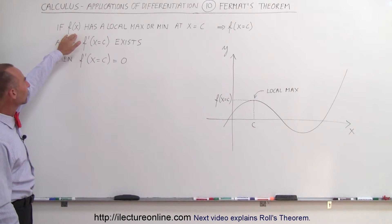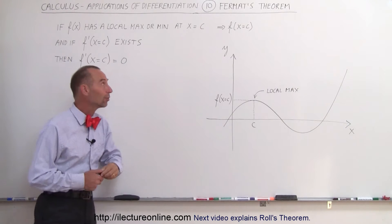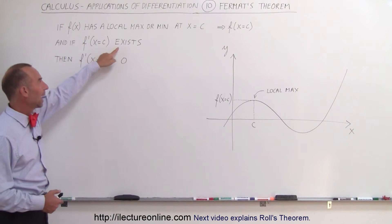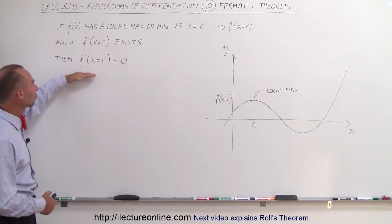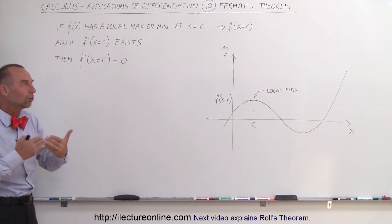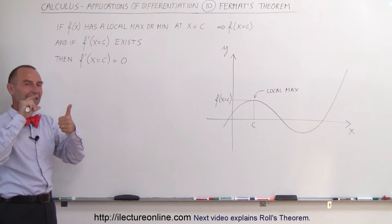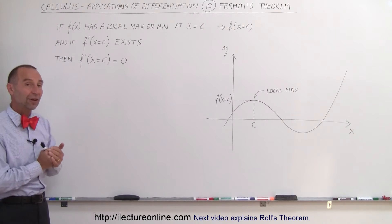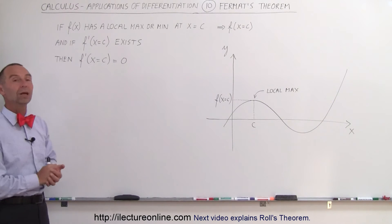If we have a function f(x) and it has a local max or min at some value for x, let's say x equals c, and if the derivative of that function at x equals c actually exists, then we can conclude that f prime of c — in other words the derivative of the function evaluated at x equals c — is equal to 0, meaning there is a zero slope there. So if there's a function that has a local max or local min at a particular value for x, and the derivative at that location exists, then the slope there must be 0.